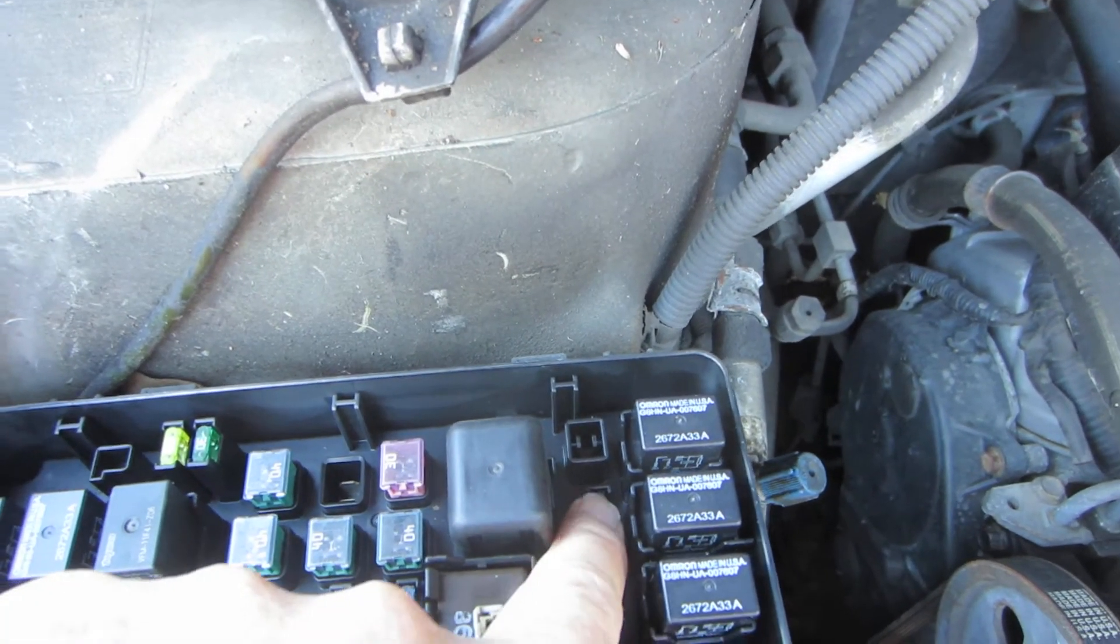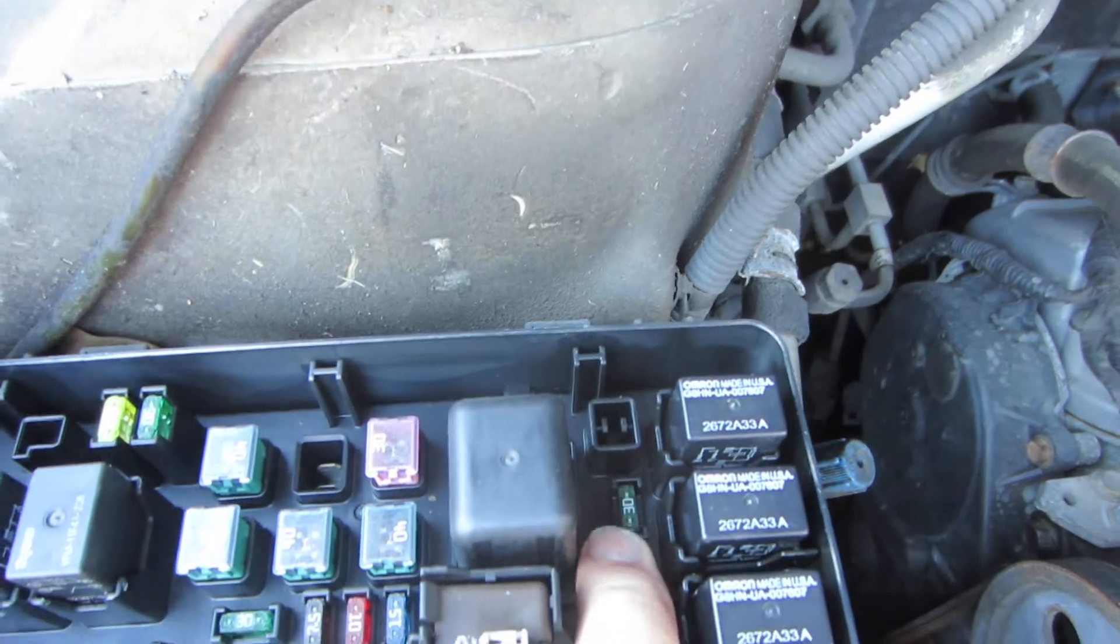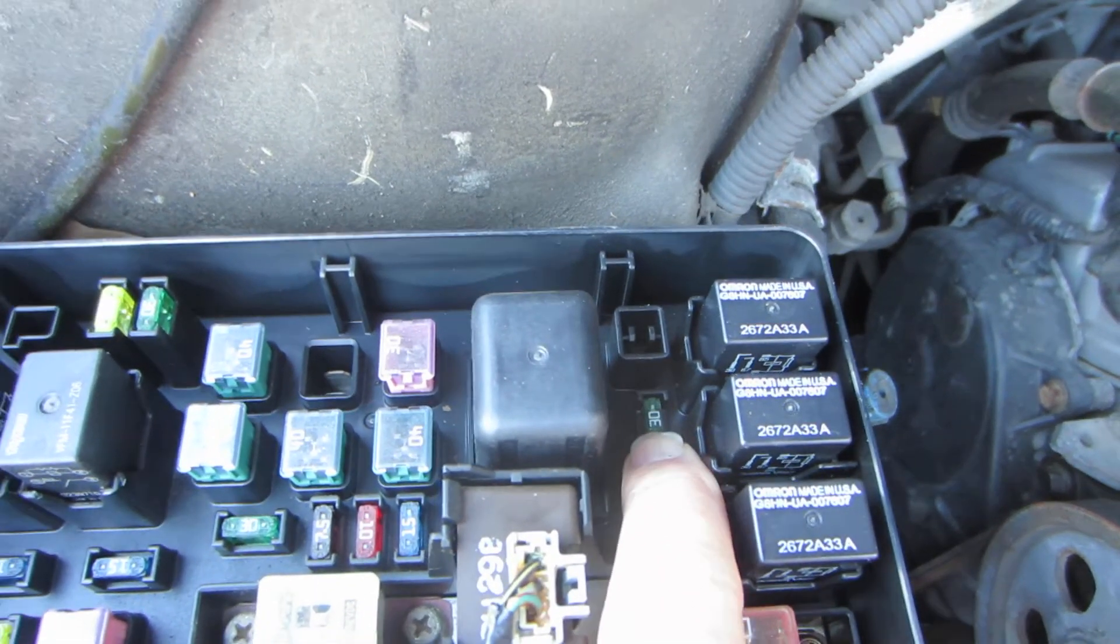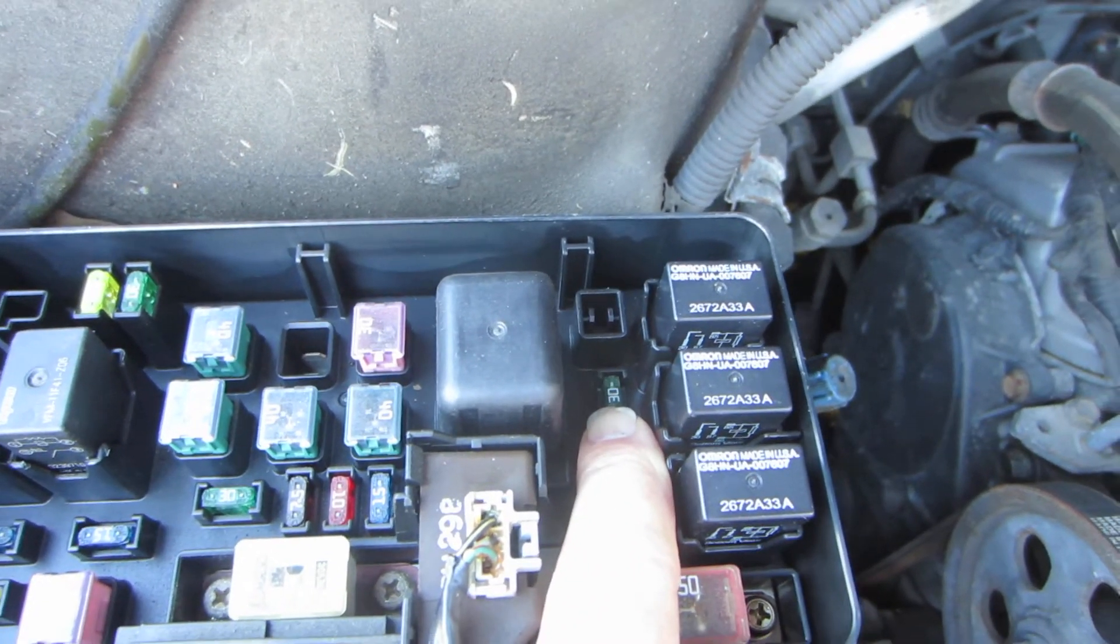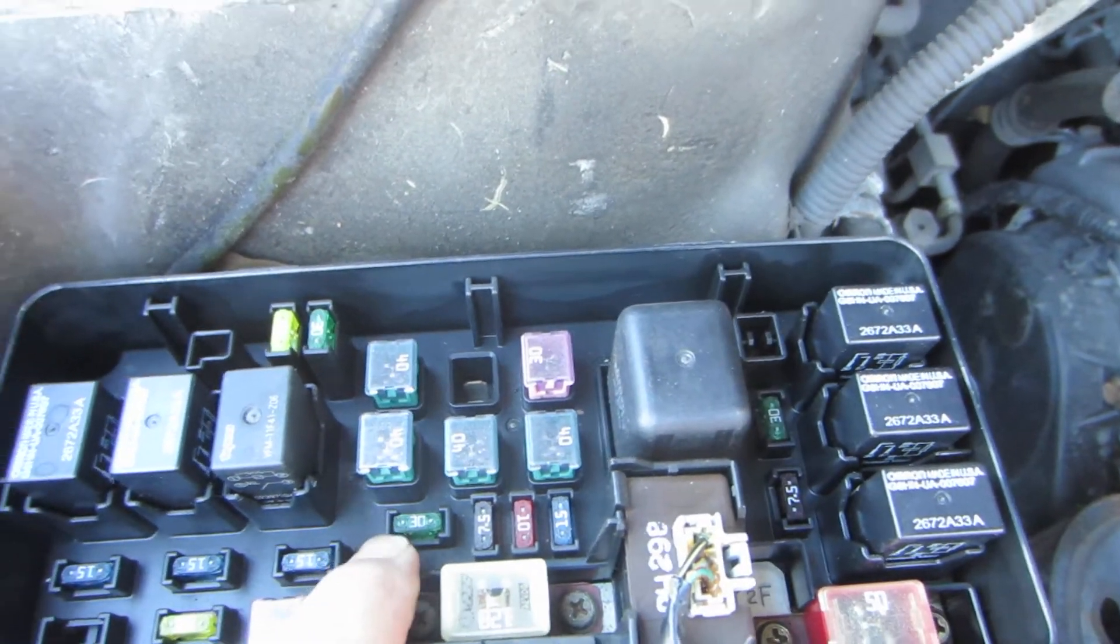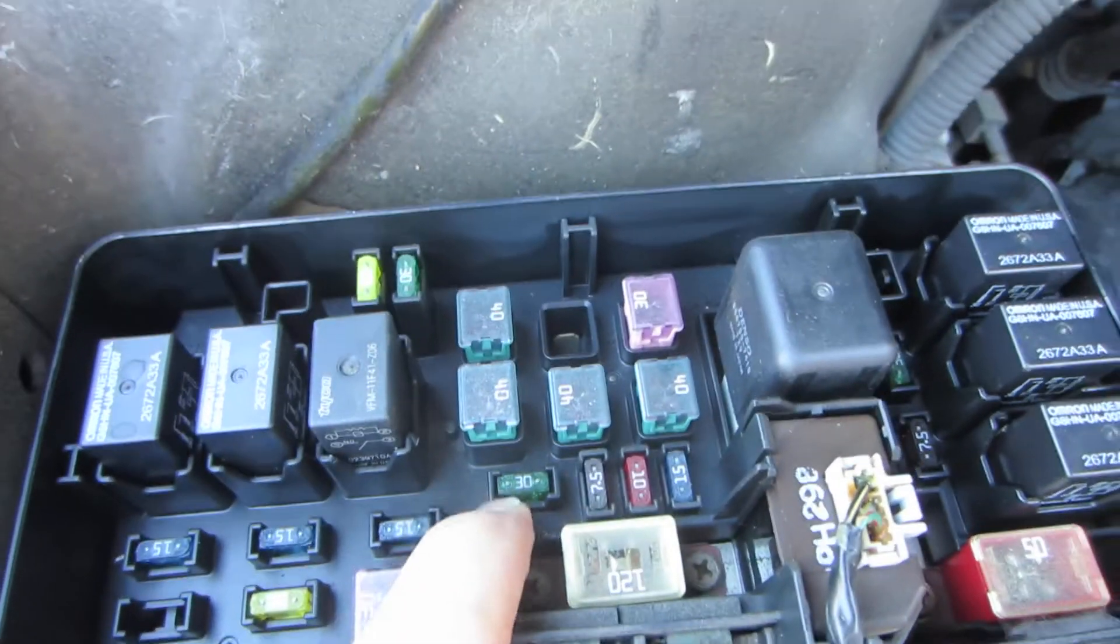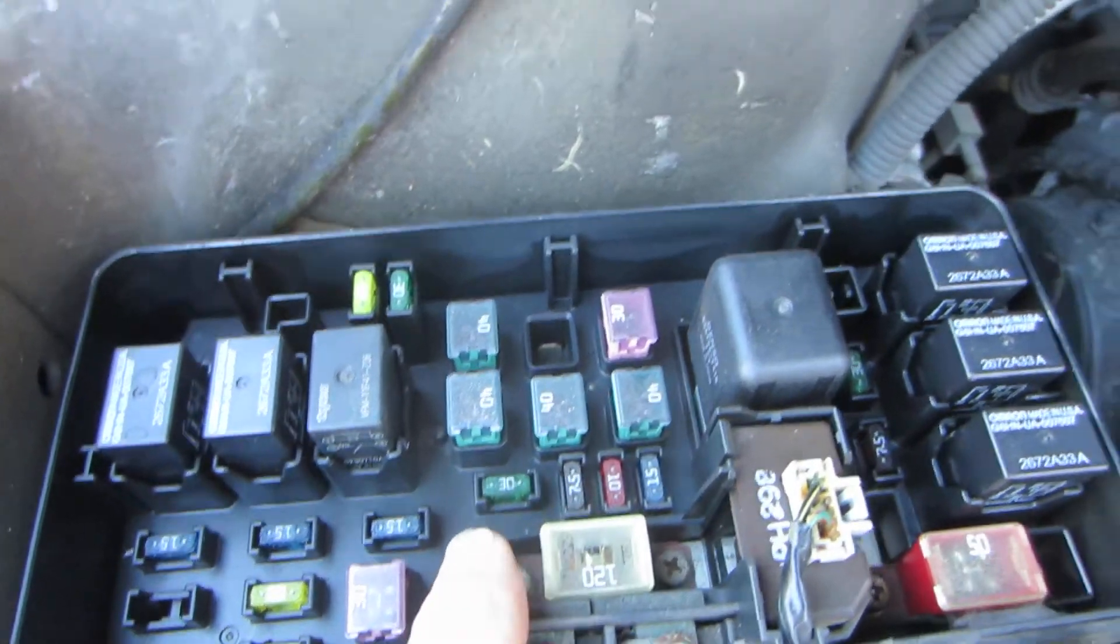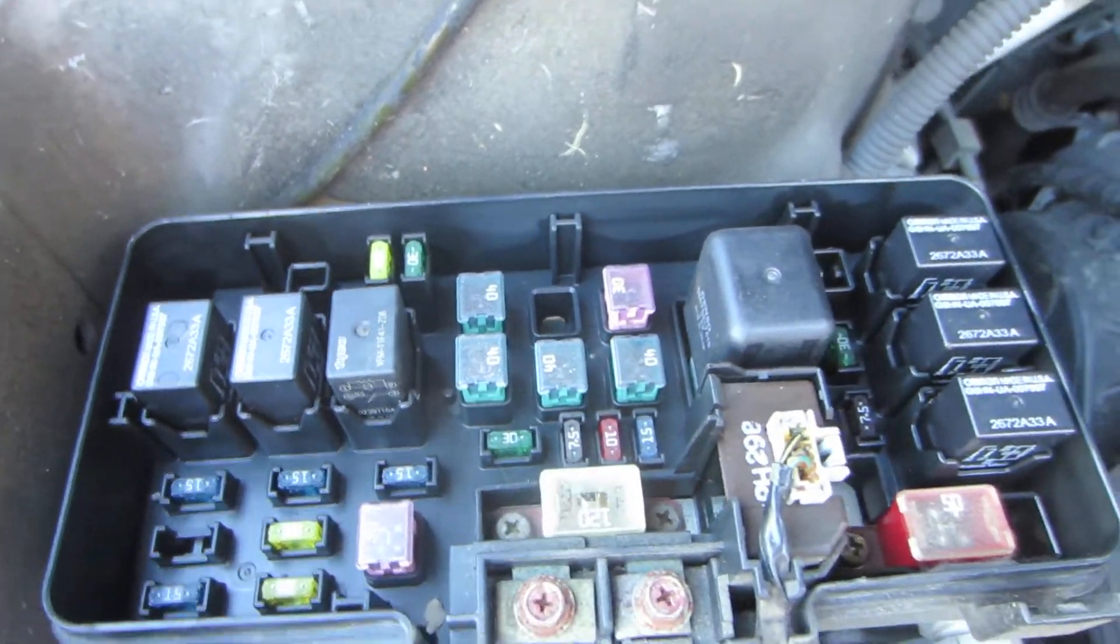This 30 amp fuse right here is the condenser fan, and I've checked those and I've got power on both sides there. And this is a cooling fan, 30 amp right here. I've got power on both sides there. So I believe it's probably a sensor problem.